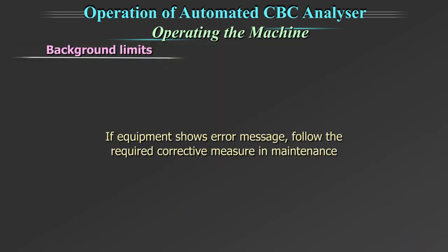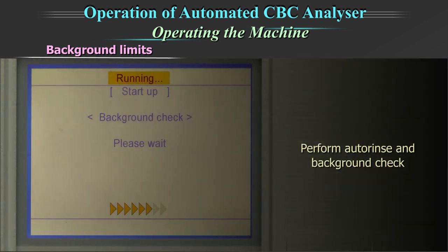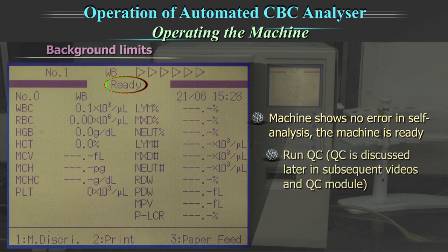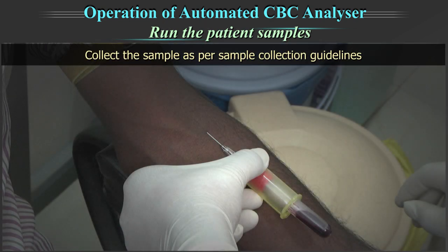In case the equipment shows an error message, follow the required corrective measures in maintenance and perform utterance and background check. If the machine shows no error in self-analysis, it is ready for analysis. Run the quality control (QC) first. After quality control, run the patient sample.